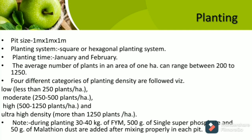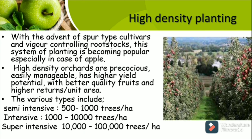For different density categories, different planting densities apply: low density is 250 plants per hectare, moderate is 250 to 500 plants per hectare, high is 500 to 1,250 plants per hectare, and ultra-high density is more than 1,250 plants per hectare. During planting, 30 to 40 kg of FYM, 500 grams of SSP, and 50 grams of malathion dust are added and mixed properly in each pit. With the advent of spur cultivars and vigor-controlling rootstocks, high-density planting has become popular, especially for apple, producing higher yield and higher returns per unit area.